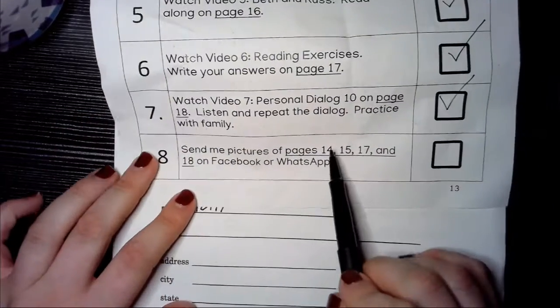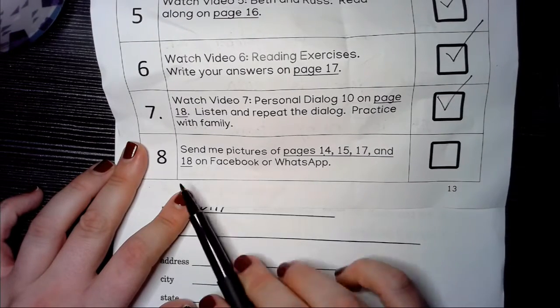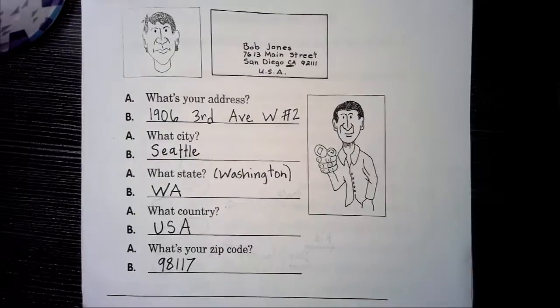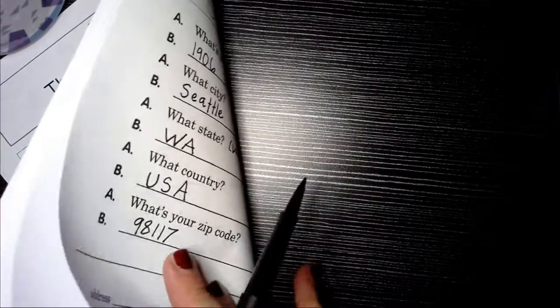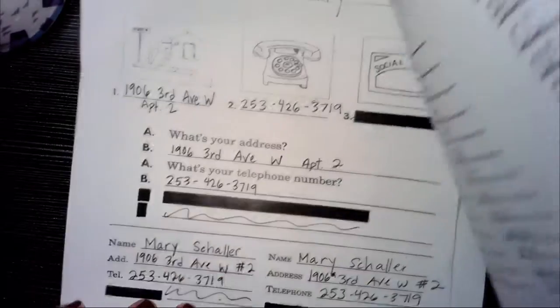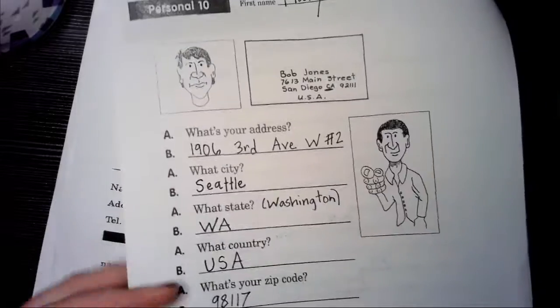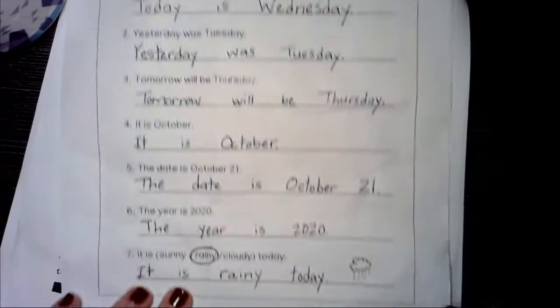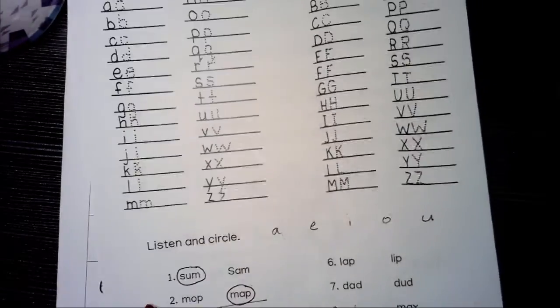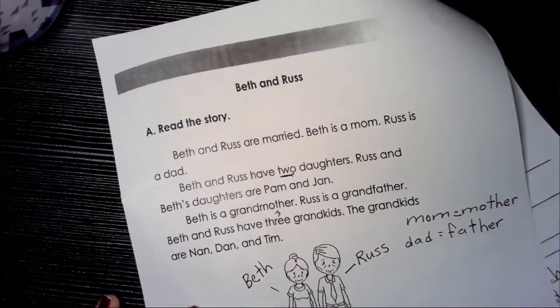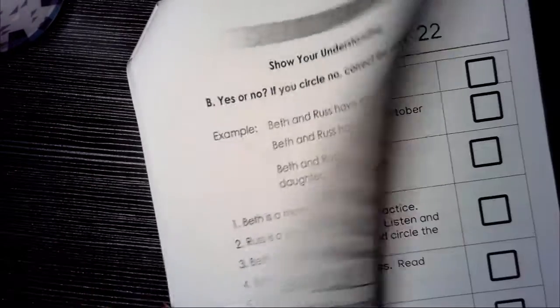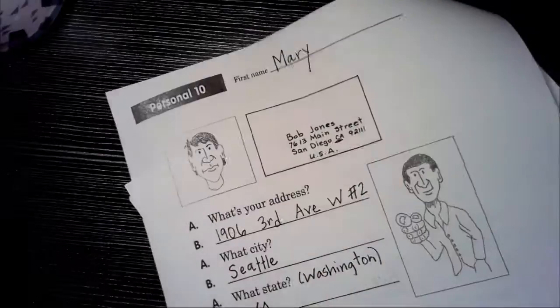And for pictures today I need pictures of pages 14, 15, 17, and 18. But maybe you'll send me a picture of the story too because we did do some stuff. Anyway, let's do 16 too. So pages 14, all about today. Page 15, alphabet and short vowels. Page 16, Beth and Russ. Page 17, reading exercises, and page 18, personal dialogue 10.